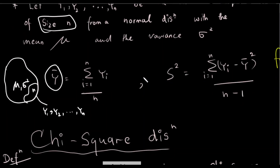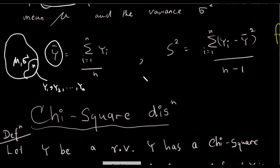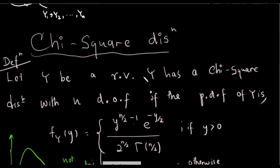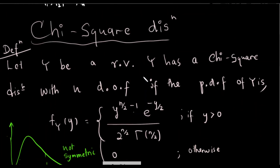For example, you can start with the same distribution. If you want to talk about the normal distribution, the standard distribution, the Poisson distribution, and the binomial distribution — this gives you a chi-square distribution.